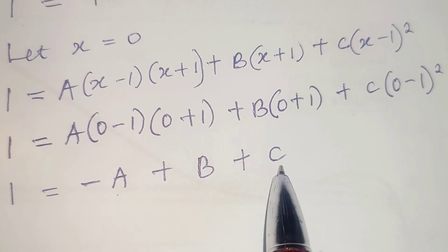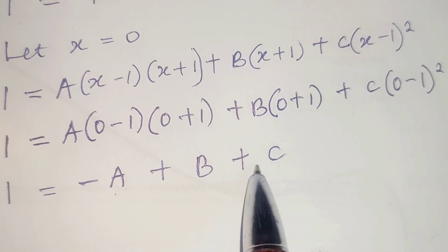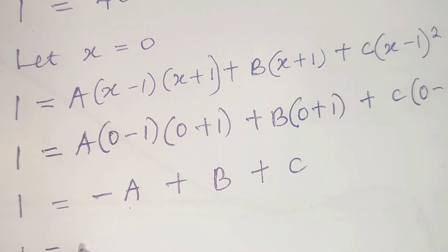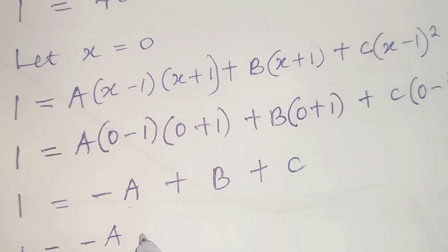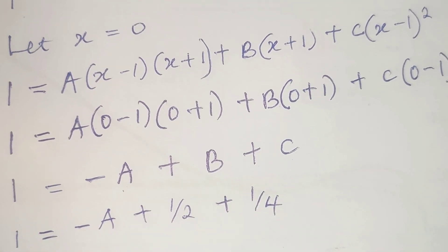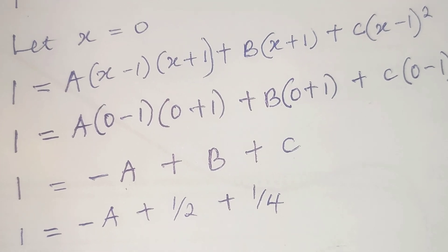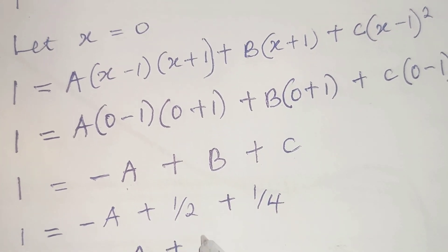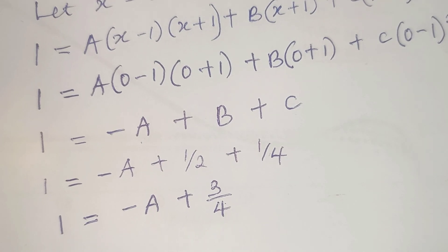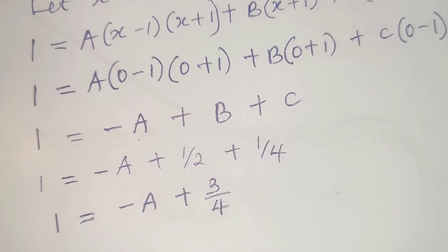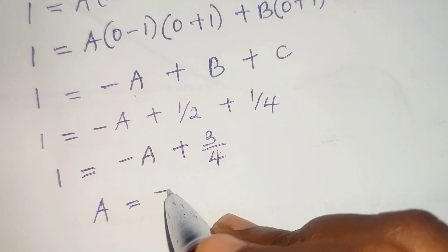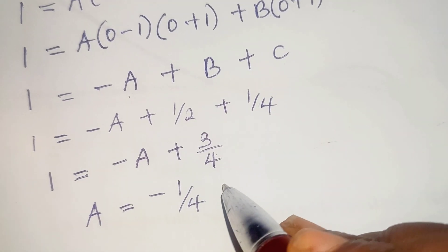We already have values for B and C, so we substitute them in: 1 equals minus A plus 1/2 plus 1/4, which gives 1 equals minus A plus 3/4. Simplifying, A equals minus 1 over 4. So that's the value for A.